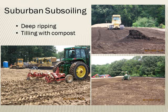We implemented suburban subsoiling through deep ripping and compost amendment. Our ripper has five blades about 20 inches deep to break up the soil and decompact it. Then we spread three inches of compost over the entire site and tried to incorporate it to a depth of nine inches for a two-to-one soil-to-compost ratio. The goal here is a restored ecosystem with deep-rooted, drought-resistant turf growing in a deep, healthy, active soil profile with restored hydrologic function.